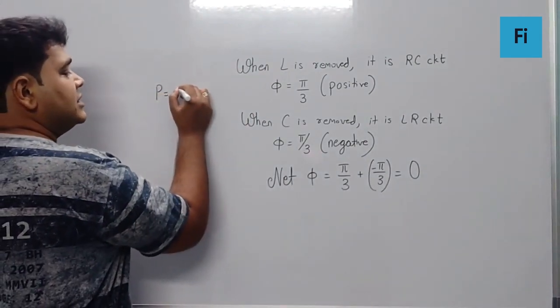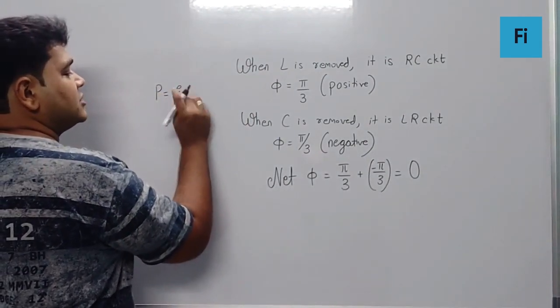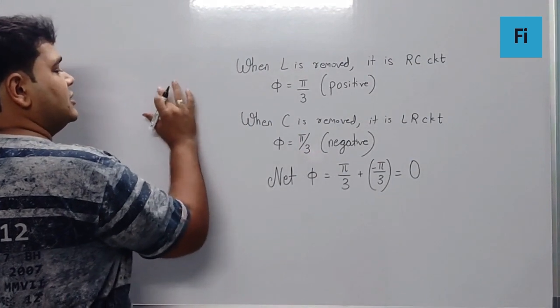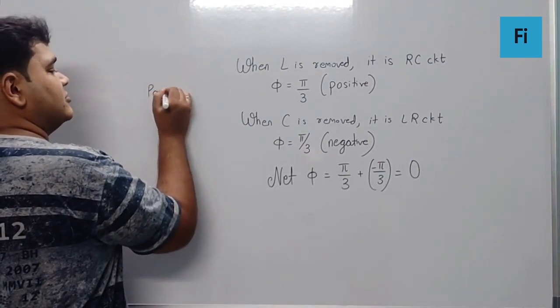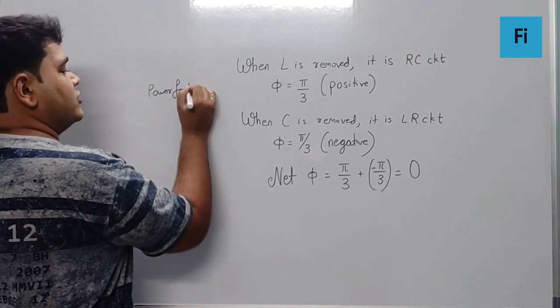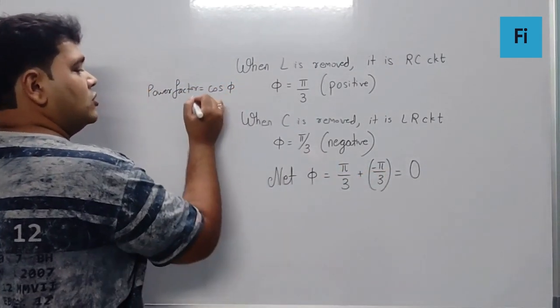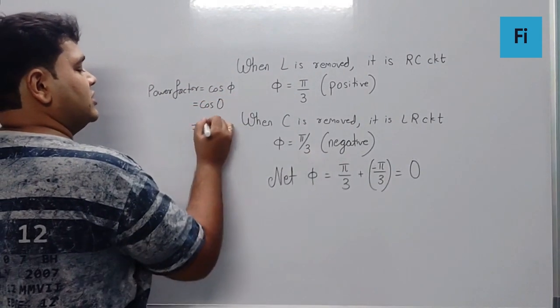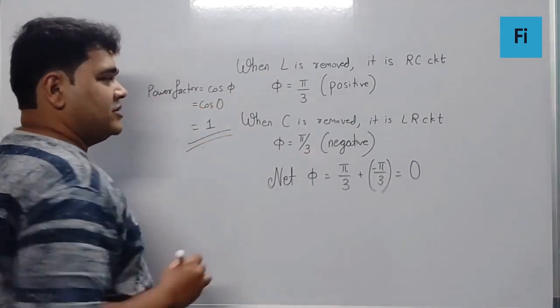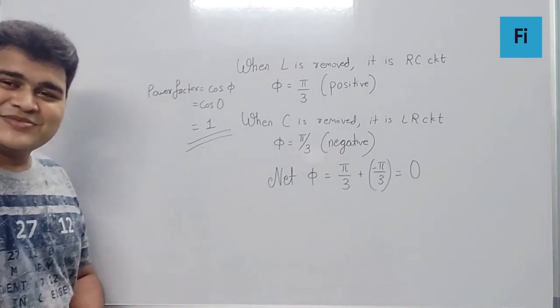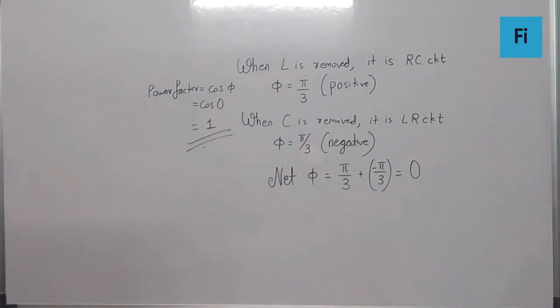In that scenario, we know the power factor is cos phi, which is cos 0, which is nothing but 1, and that is going to be our final answer.